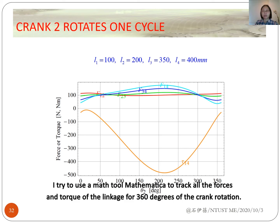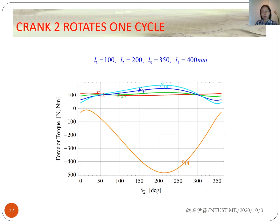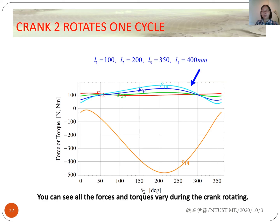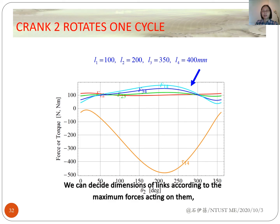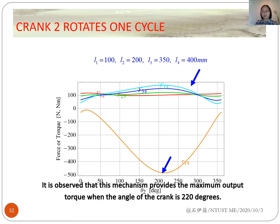Using a math tool, I track all the forces and the torque of the linkage for 360 degrees of crank rotation. You can see all the forces and torques vary during the crank rotating because the position of the mechanism varies. We can design the dimensions of the linkage according to the maximum forces acting on each link. It is observed that this mechanism provides the maximum output torque when the angle of the crank is 220 degrees.